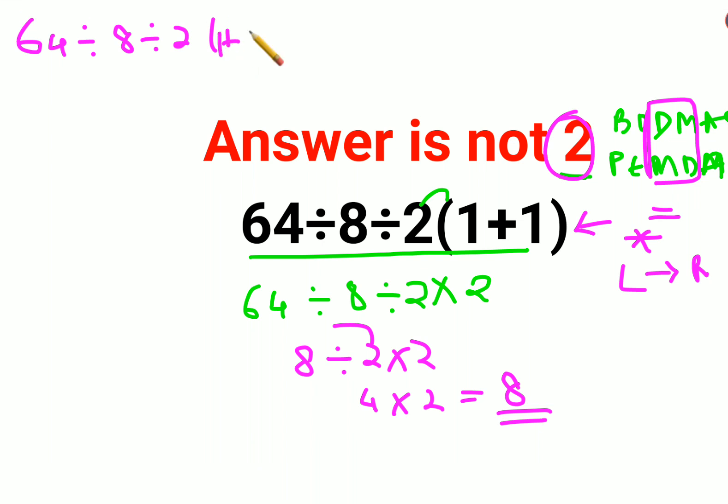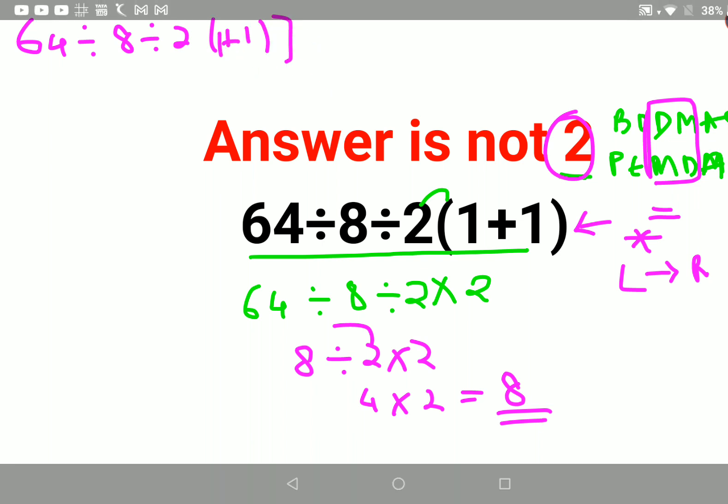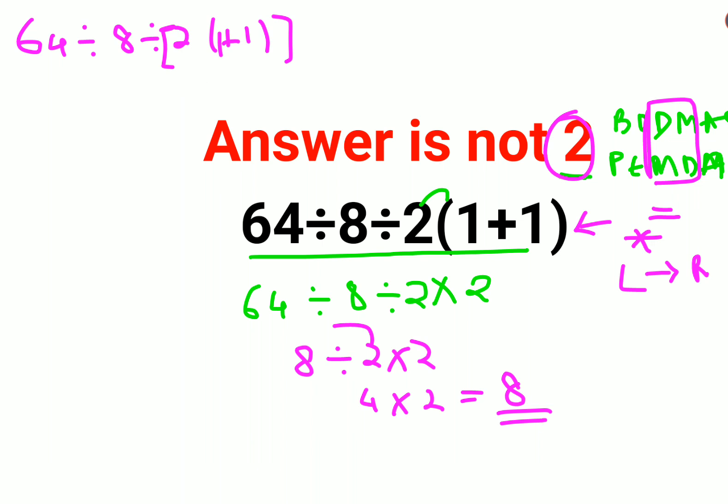The entire question would remain the same, but if they had provided another bracket, that means this operation has to be done first. So we'll do 64 divided by 8, divide by 2 into 2, that is 4.